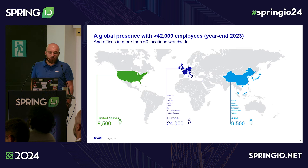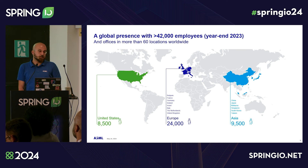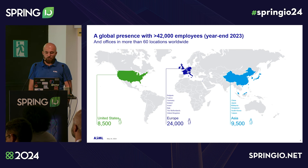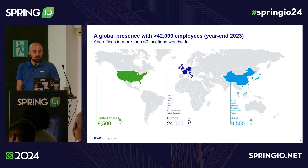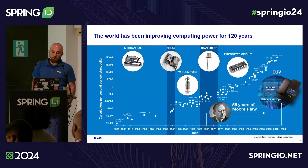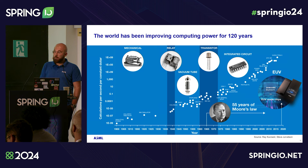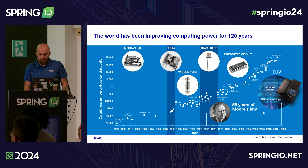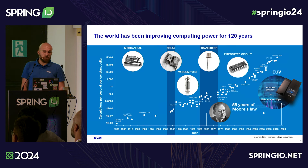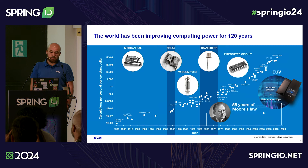Let me tell you about ASML for those not aware of how big we are. At the end of 2023, we had over 40,000 employees scattered across more than 60 locations around the world. This gives an idea of how many people are involved in lithography chip manufacturing, and it means we have to consider the systems we build in this very large organization. Computing power has increased by 18 orders of magnitude over the last century.